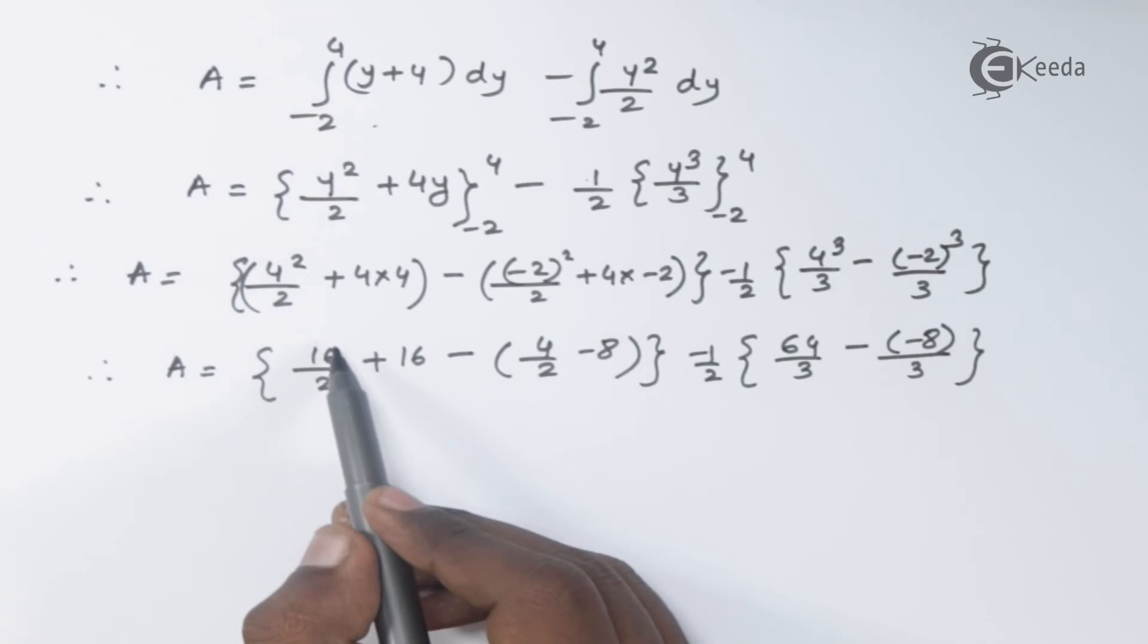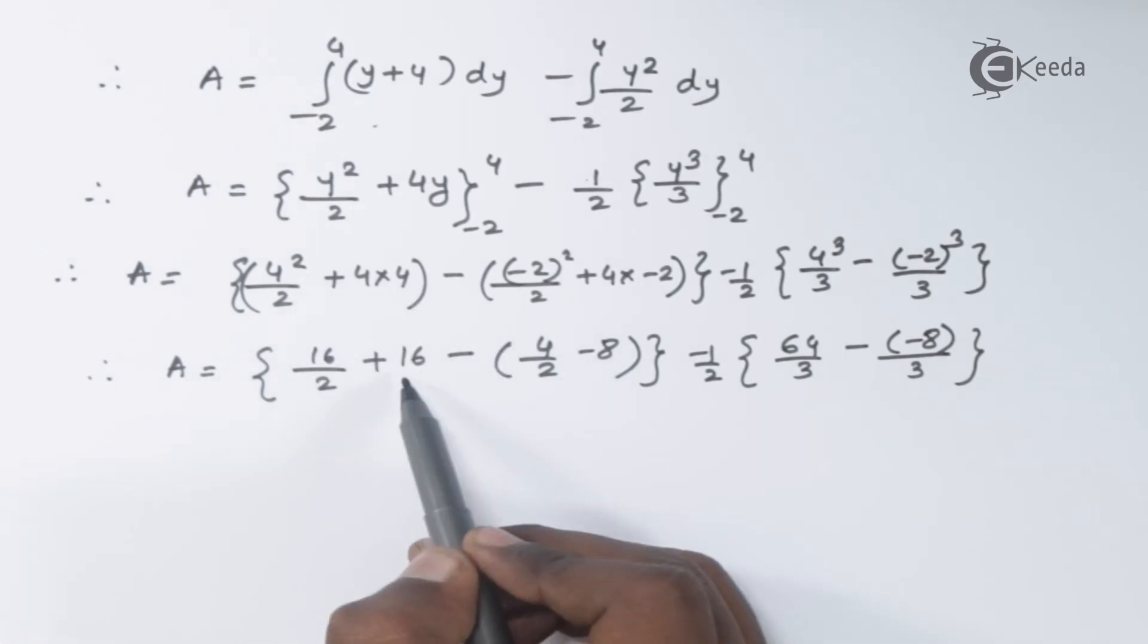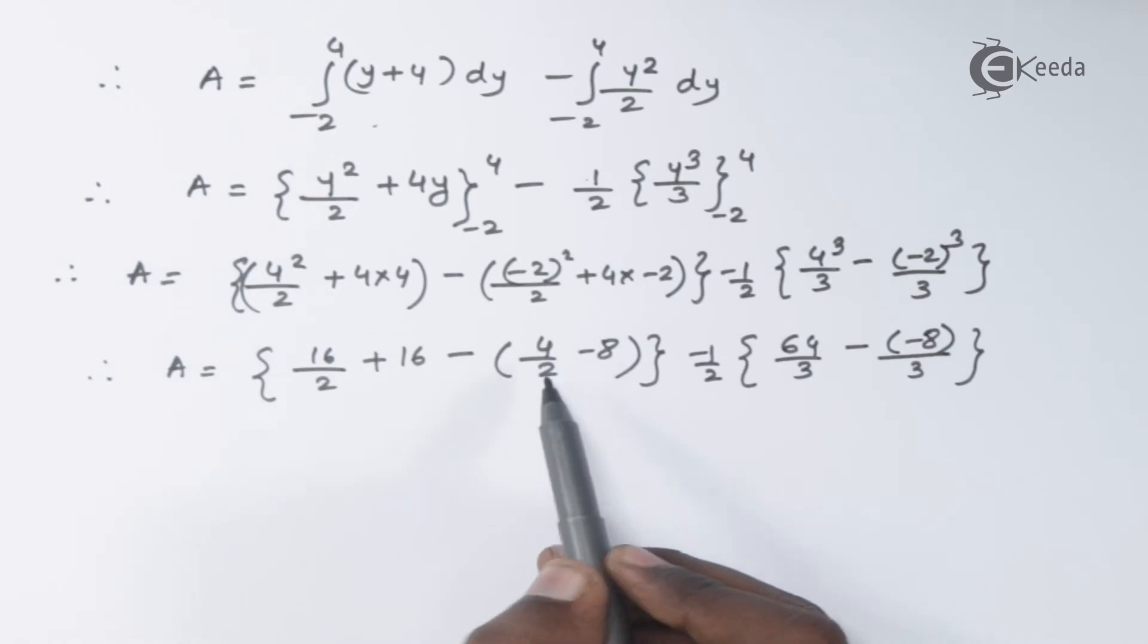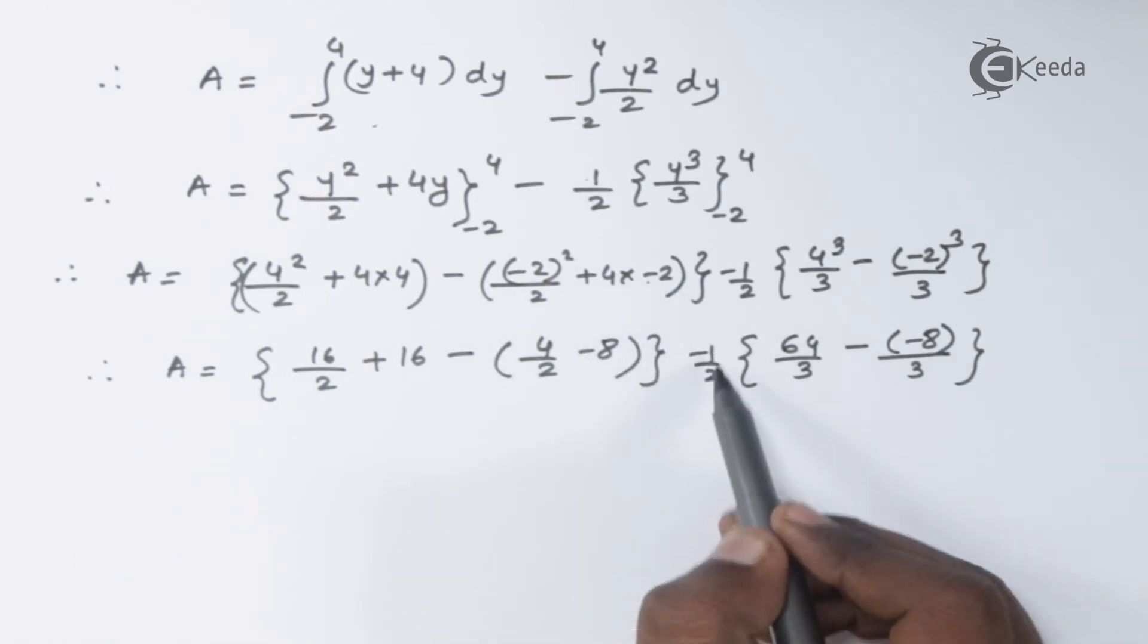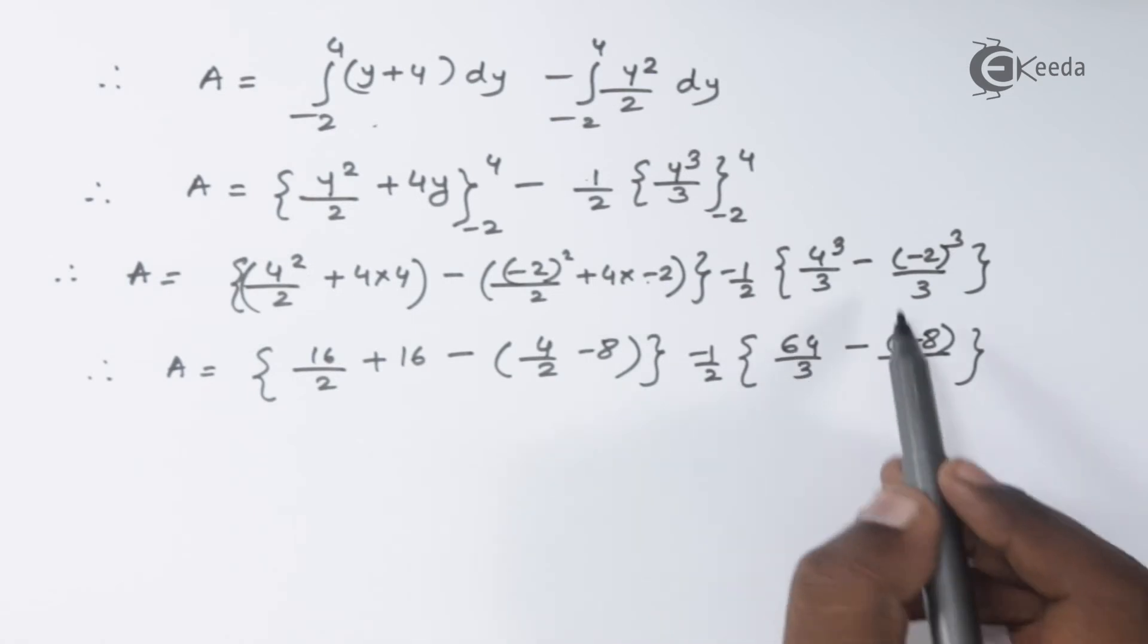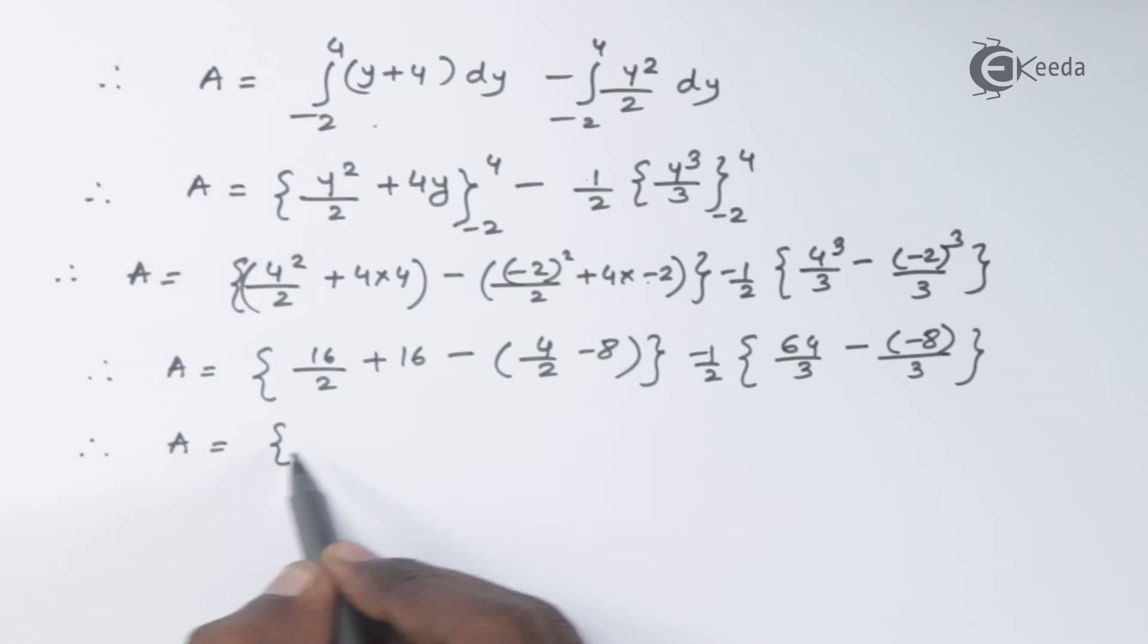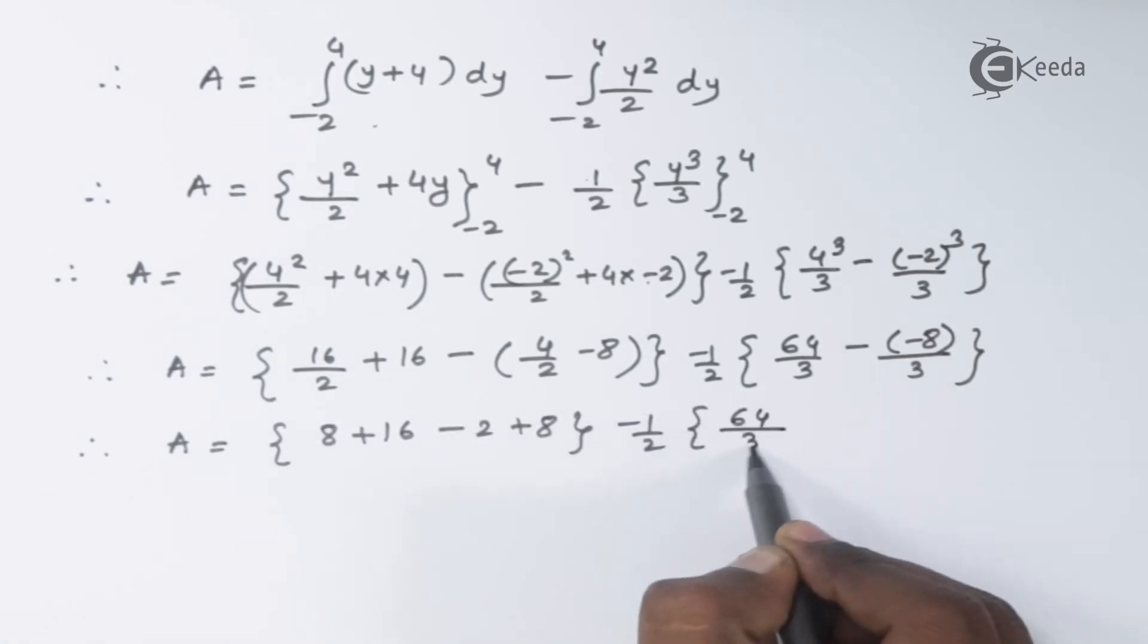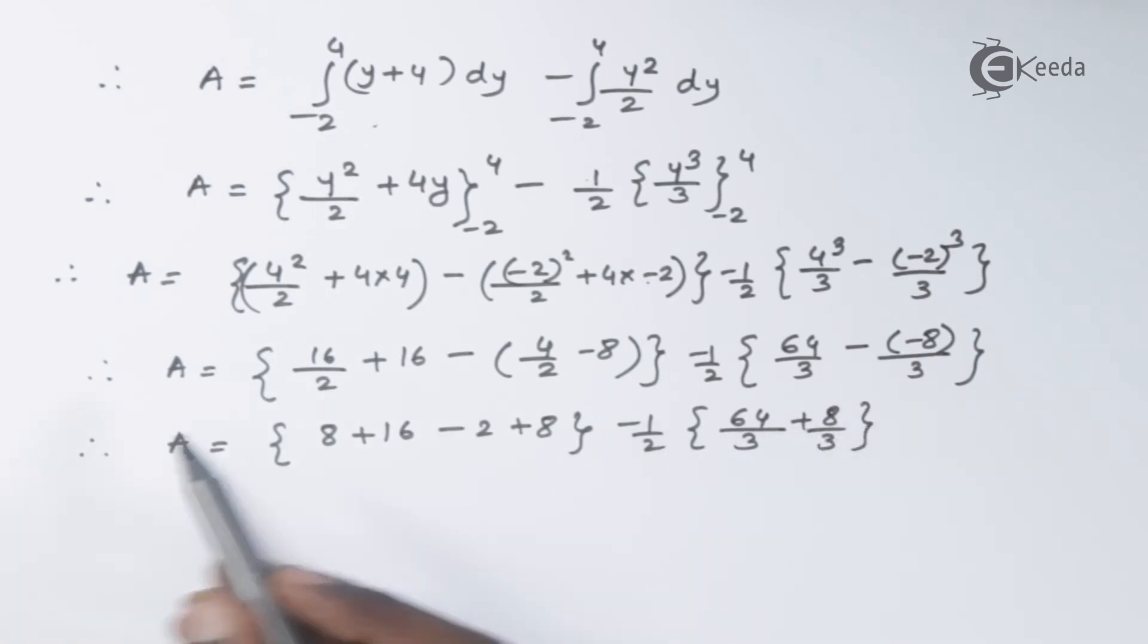This will give you 4²/2 + 4(4) = 16, minus (-2)²/2 = 4/2, plus times minus will be -8, followed by -(1/2)(64/3), and (-2)³ will give you -8.